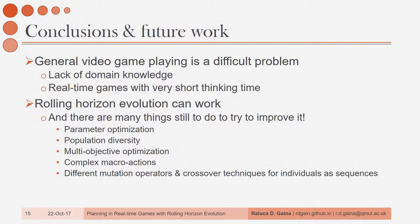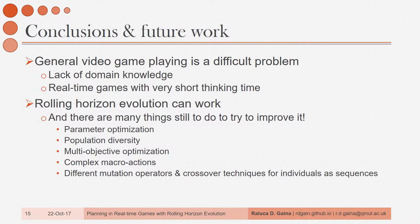To conclude, general video game playing is a difficult problem due to two things: the lack of domain knowledge available to the agents — as they need to be transferable between problems with minimal tweaking — and the fact that real-time games have a very limited thinking time. Rolling horizon evolution can work, and there are many more things to try to improve it. Some of these are parameter optimization, population diversity — which is what I'm focused on at the moment — multi-objective optimization, more complex macro actions than simply repeating the same action (which would be very useful in puzzle games, where we could define things such as 'push the box into the hole'), and different mutation operators and crossover techniques for individuals as sequences.